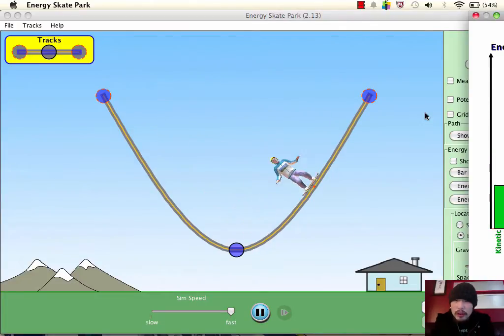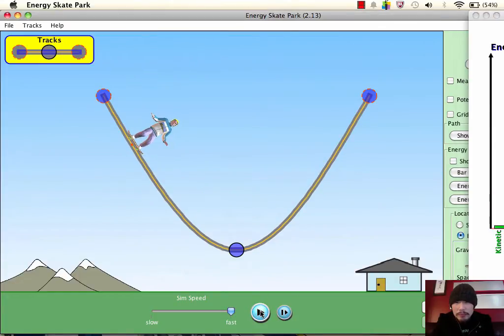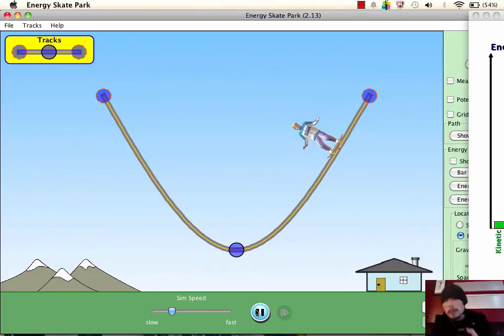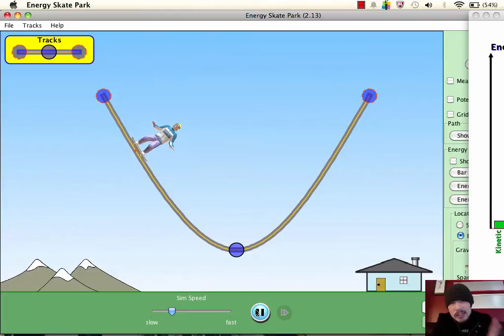So here at the bar graph, we can see that as the guy reaches the max height, look at this potential energy bar. It's big, it's really big. But then as he goes down, I'm going to put this in slower motion, look what happens to the potential energy. It turns into kinetic energy and then back into potential. And here's the reason why. When this man is at the peak, he only has potential energy.